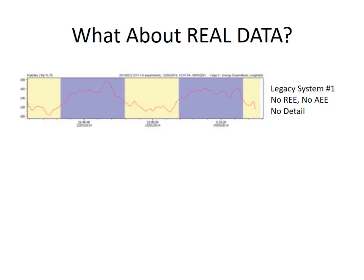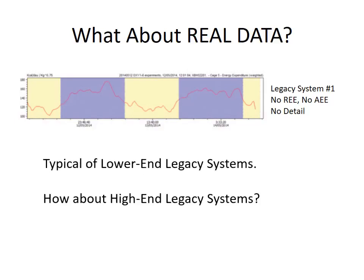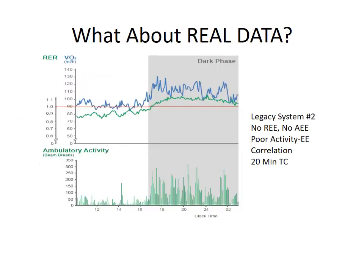Now, what about real data as opposed to mathematical models? Here's a fairly low-end legacy metabolic phenotyping system — you really have no information on resting energy expenditure or active energy expenditure, and there's no real detail in the trace, so it's of very little use. What about the higher-end legacy systems? Here's an example: you still have no idea what resting energy expenditure is, you still have no idea what active energy expenditure is, and the correlation between activity and energy expenditure is very poor and inconsistent.